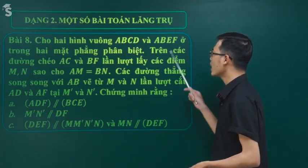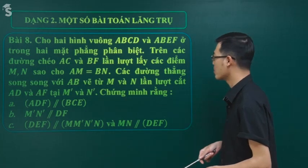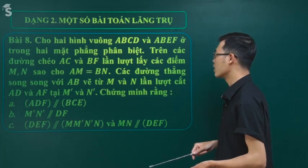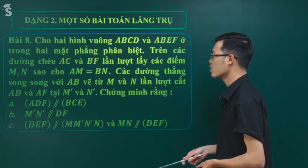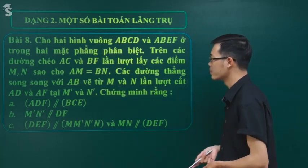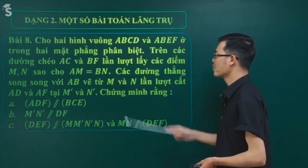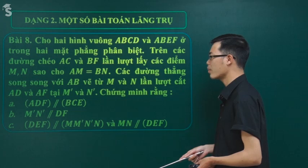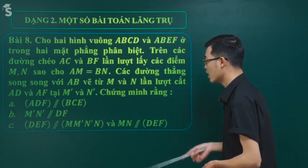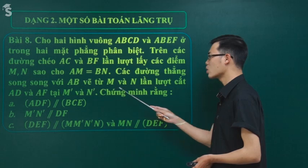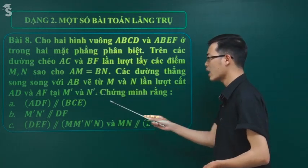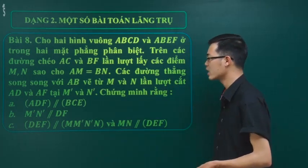Bài 8 có nội dung như sau: Cho hai hình vuông ABCD và ABEF ở trong hai mặt phẳng phân biệt. Trên các đường chéo AC và BF, lần lượt lấy các điểm M và N sao cho AM = BN. Các đường thẳng song song với AB vẽ từ M và N lần lượt cắt các cạnh AD và AF tại M' và N'.